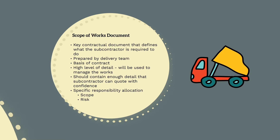When reviewing the scope of works, the potential subcontractor should understand exactly what they are being engaged to do and consequently be able to quote with confidence. For example, if you're getting quotes to supply and install a drainage line, it should be clear who's providing the drainage pipes, the depth of excavation, what compaction requirements there are, and what drain testing requirements apply.